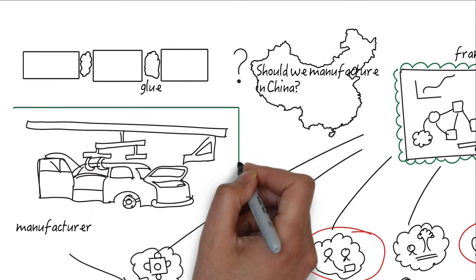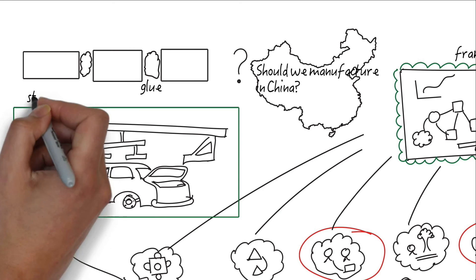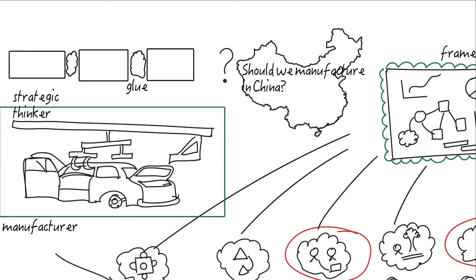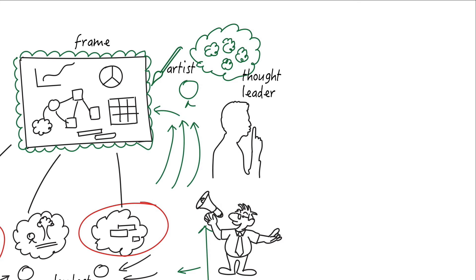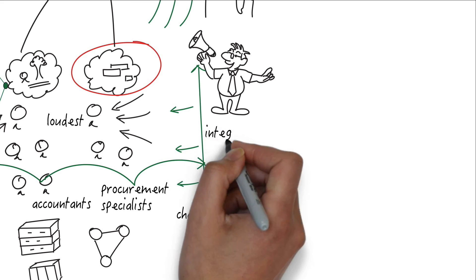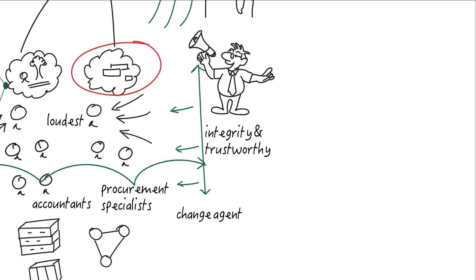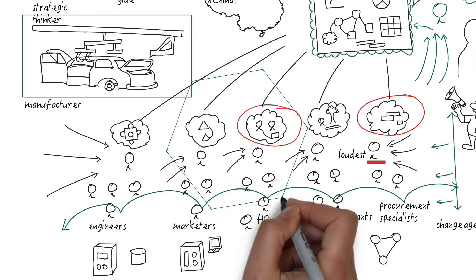This person is a strategic thinker who can frame the organization in its environment. This person is a confidant who is discreet about sharing certain kinds of information. This person has integrity, is trustworthy, and able to connect the dots.